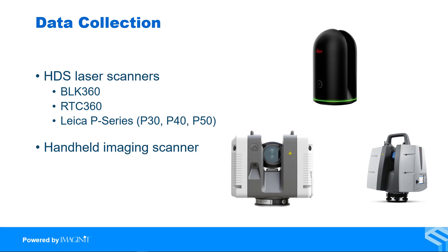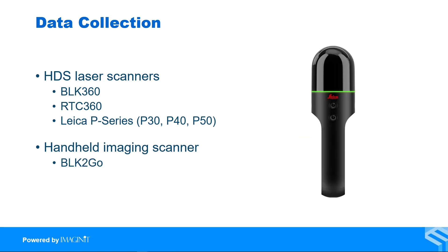All of these scanners are a fantastic choice to get the data needed for floor flatness. However, sometimes even the fastest of these scanners just take too long for some project requirements. That's why there's a scanner like the BLK2GO. This handheld scanner scans as the user walks the site at a slow pace and collects points and images. While it is not as accurate as the others mentioned, it is a much faster solution.